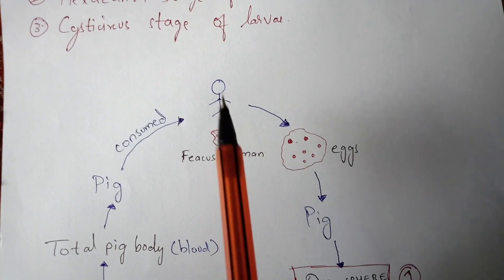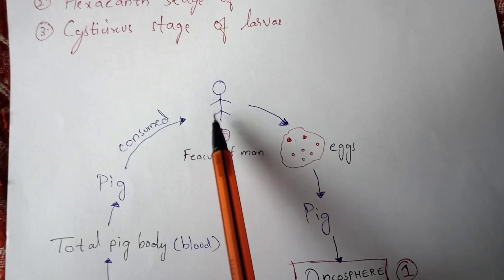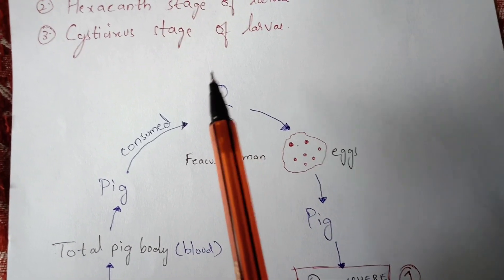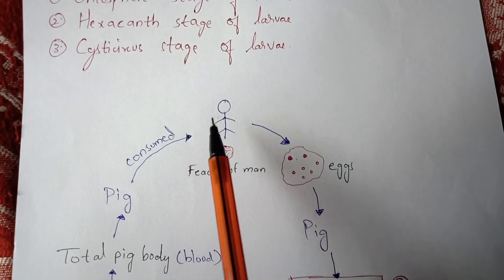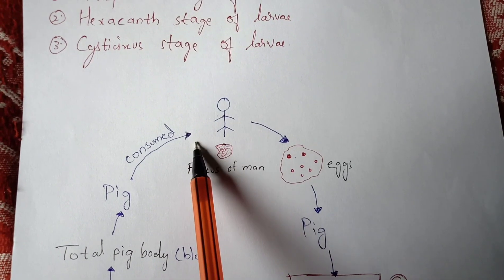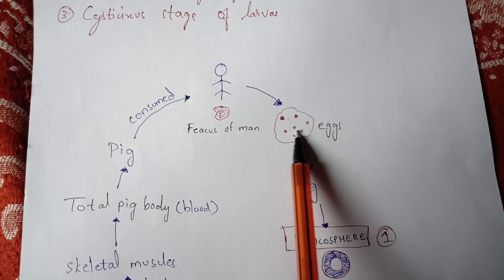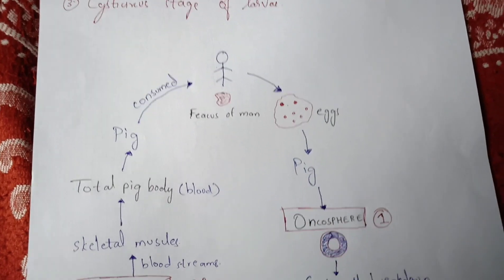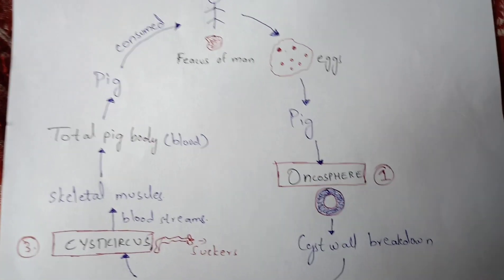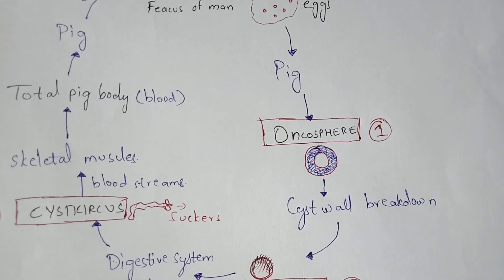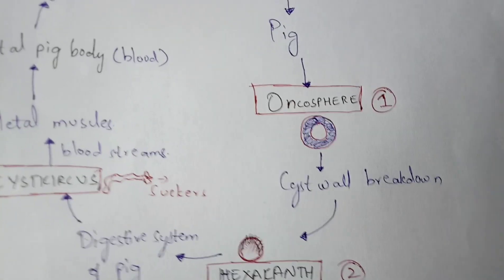Starting from the beginning of the cycle: a human body infected with Taeniasis excretes fecal matter containing tapeworm eggs released in the small intestine. This fecal matter is then consumed by a pig. When the pig eats the fecal matter, the eggs enter the pig's digestive system. At this point, the stage is known as the oncosphere stage of larva — the first larval stage in the life cycle of Taenia solium.